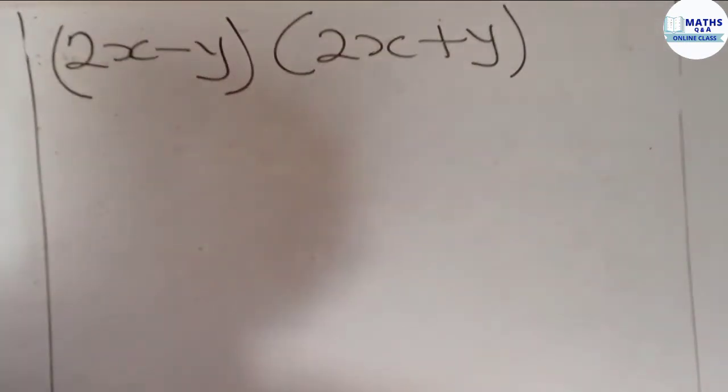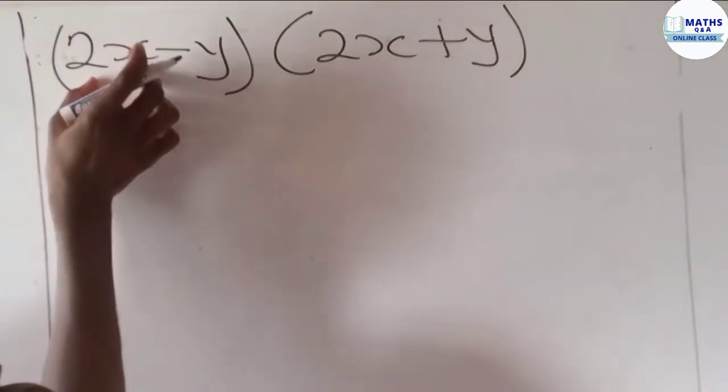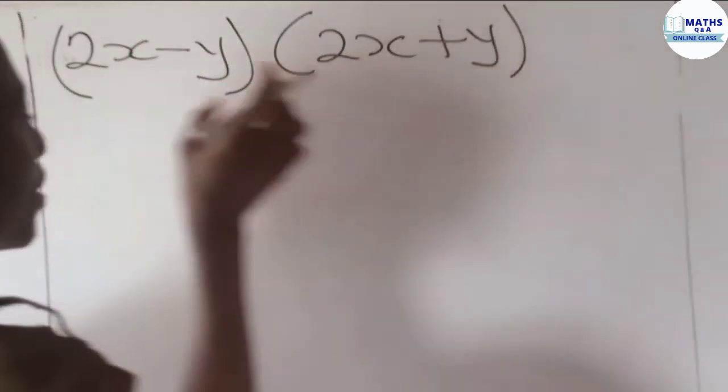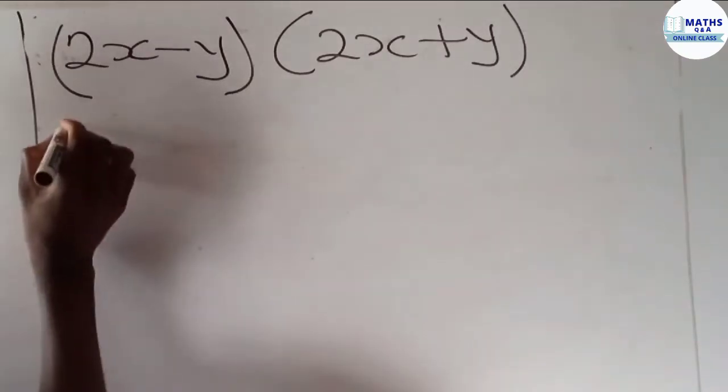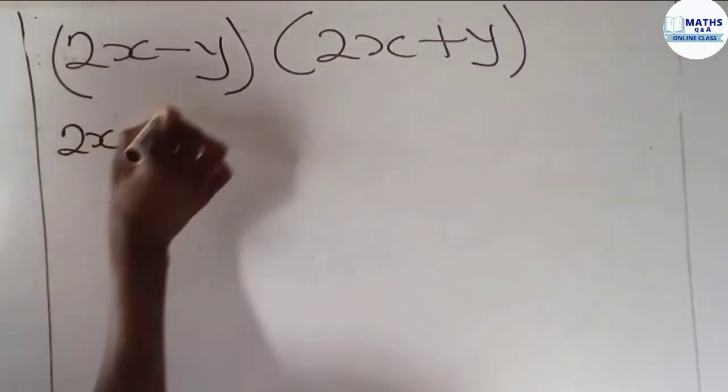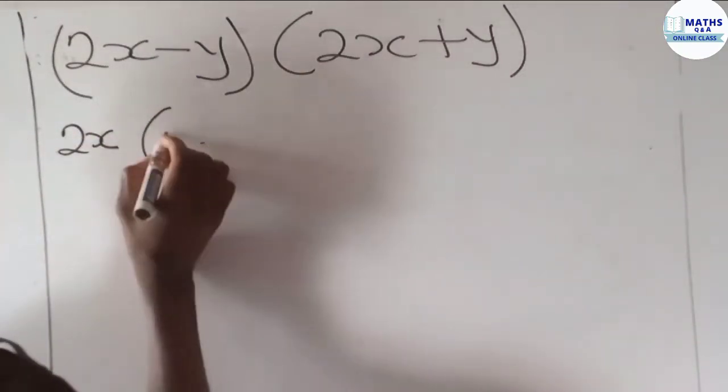Let's see how it's done. You take one term and multiply by each term in the other bracket. So we take 2x and multiply by the entire terms in this bracket, which is 2x + y.